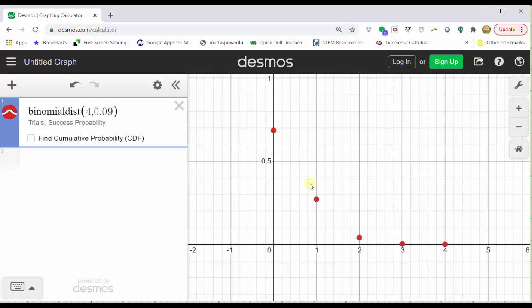Again, our first goal is to determine the probability X is equal to zero, or zero of the people are left-handed. We can do this two ways. We can simply click on the point where X equals zero, which is this point here. The second value in the ordered pair gives us the approximate probability of 0.6857.